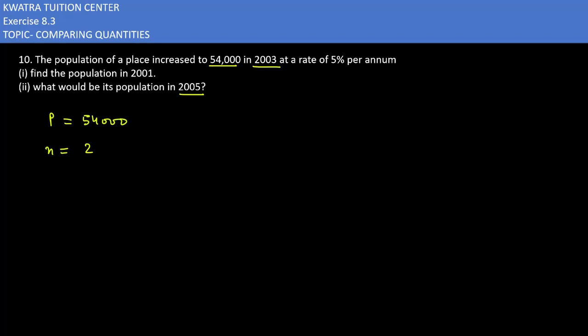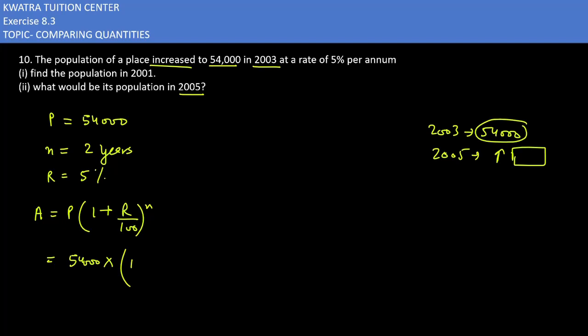So n would be two years, and we have the rate which is 5%. Next step, you have to find the amount. In 2003 population is 54,000, obviously in 2005 it has been increased. We will be using the same formula: A = P(1 + R/100)^n. Principal is 54,000, 1 as it is, R will be 5 over 100 raised to 2.